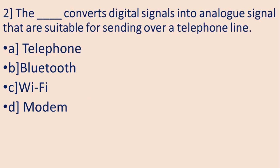Now next, the blank converts digital signals into analog signals that are suitable for sending over a telephone line. Option A is telephone, B is Bluetooth, C is Wi-Fi, and D is Modem. So the correct answer is D, Modem.